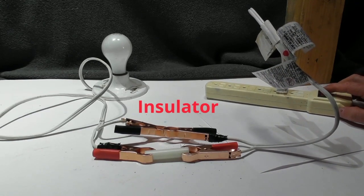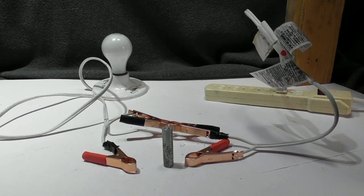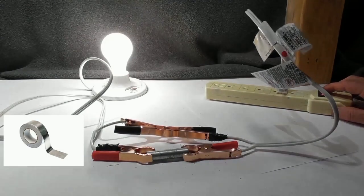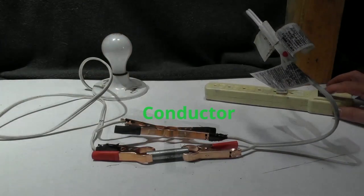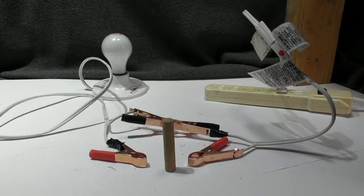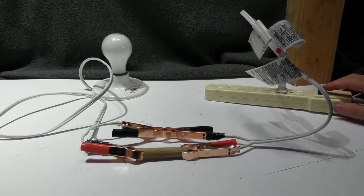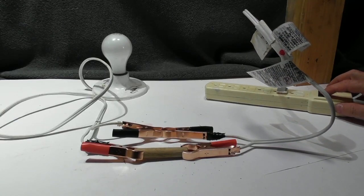Now we move on to another piece of metal. It's aluminum. Flip the switch. And yes, it is a conductor. Now how about some wood? Hook it up. Flip the switch. Nothing happens. So it is an insulator.